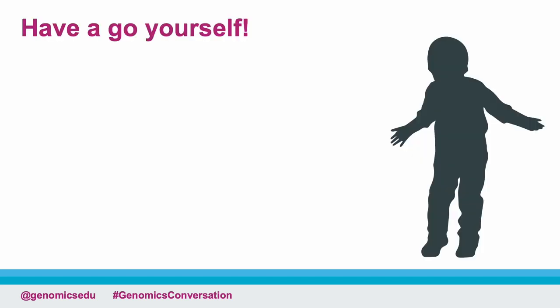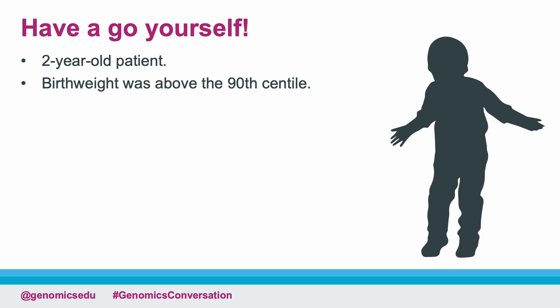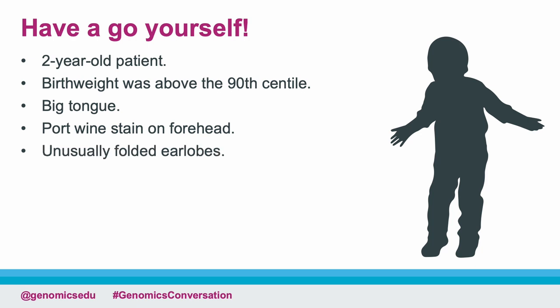Now we've run through everything, here's a case for you to consider yourself. You see a two-year-old patient in clinic. Their birth weight was above the 90th centile. They have a big tongue and a port wine stain on their forehead. You also notice unusually folded ear lobes. After this tutorial, feel free to explore the HPO website for yourself. What HPO terms would you select based on this information? Could this information help you with making a diagnosis?